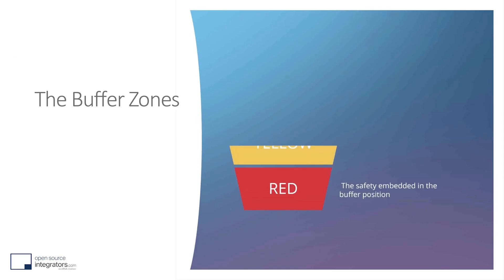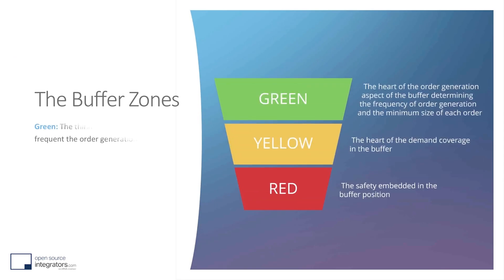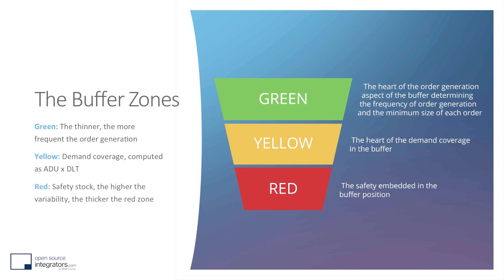So what are the three zones in the buffer and what are they used for? The green zone is the central point of the buffer. It defines how often and with which quantity you want to order a certain item. The net flow is going to move within that green zone. The yellow zone is here to cover your demand while you are expecting some resupply from suppliers or from your manufacturing line. And the red zone is basically the safety embedded into the buffer — the more variability you have in the supply of a product, the thicker the red zone will be to make sure you never run out.